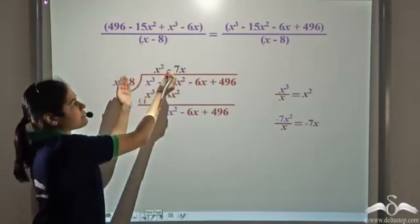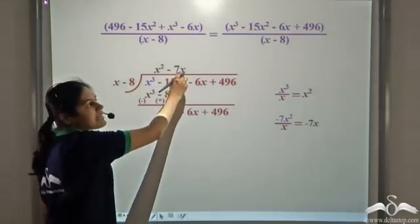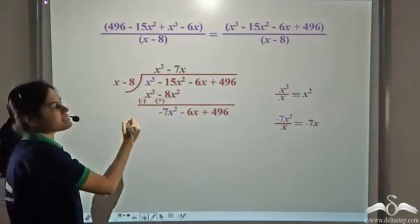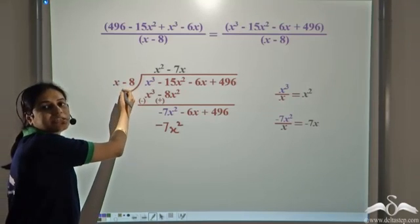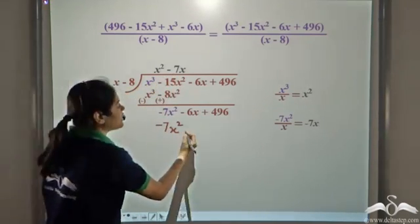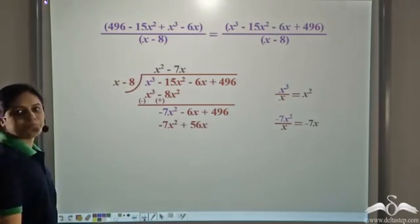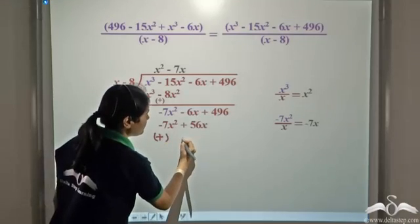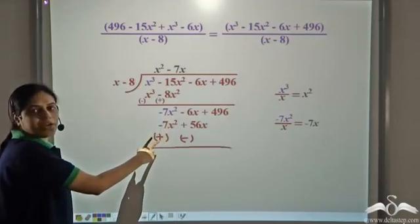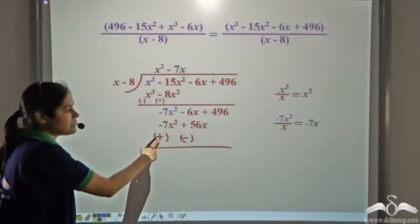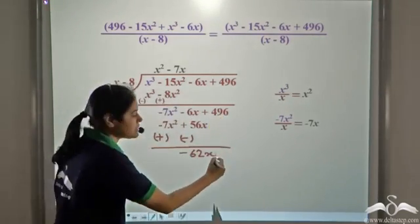Now divide the first term by the first term: negative 7x squared divided by x gives negative 7x. This becomes the second term of the quotient, so the quotient so far is x squared minus 7x. Now multiply the divisor by negative 7x — remembering the negative sign: negative 7x times x is negative 7x squared, and negative 7x times negative 8 is plus 56x.